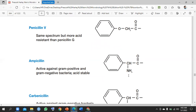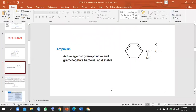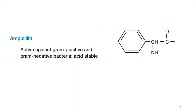The only difference is that here we have attached an amino group — an NH2 group. That is why it is known as aminopenicillin. Apart from this addition, it is totally the same as the natural penicillin. Now I will explain why we made this modification and what its importance is.